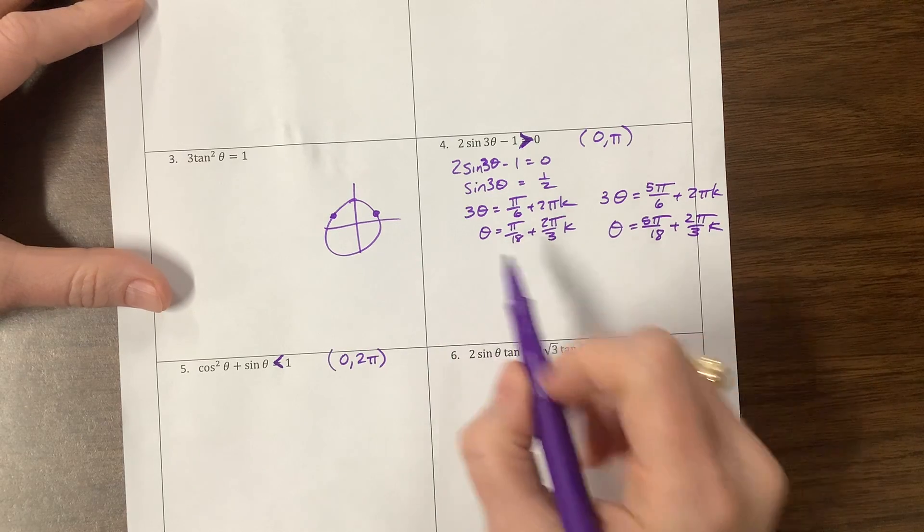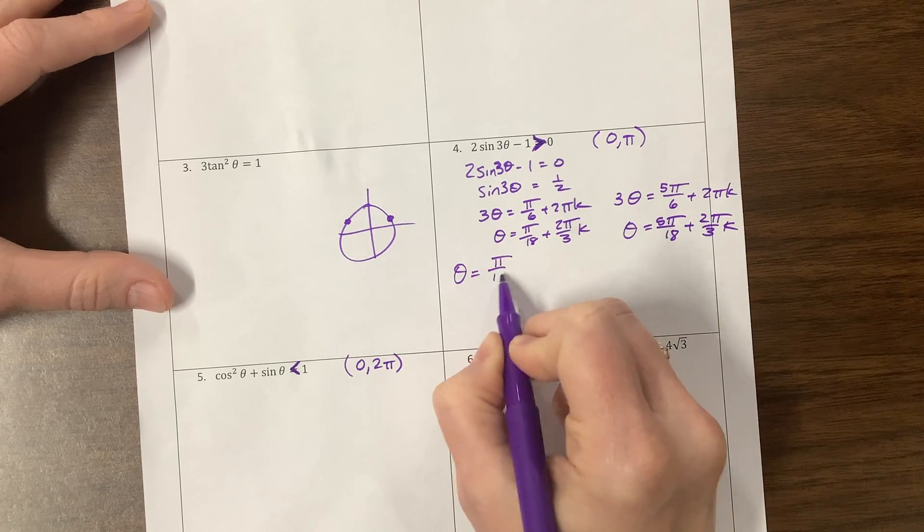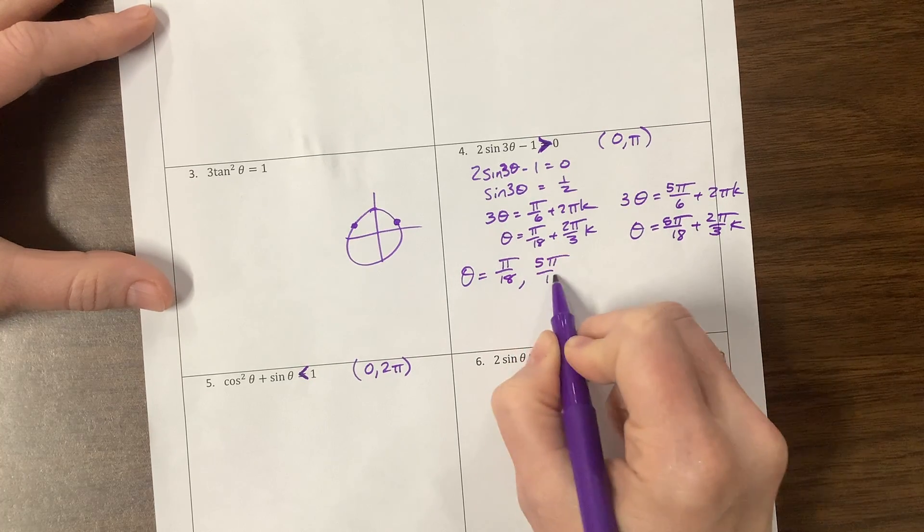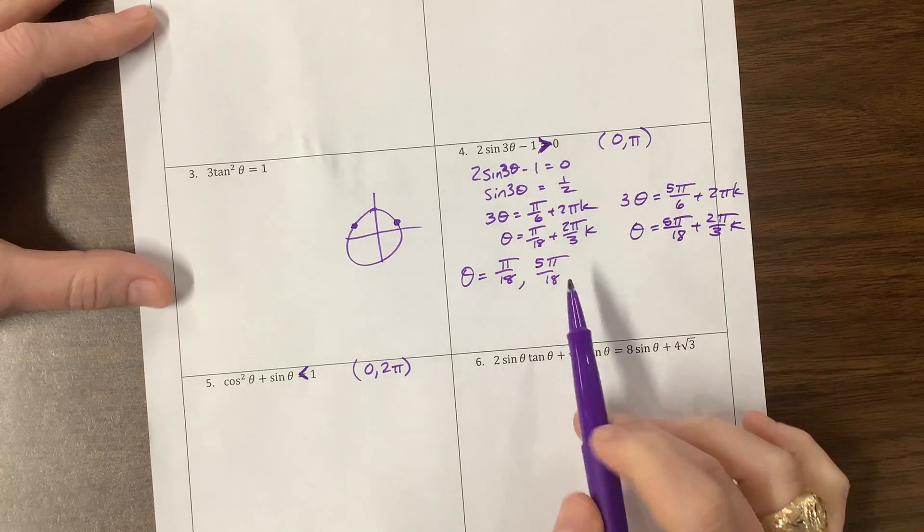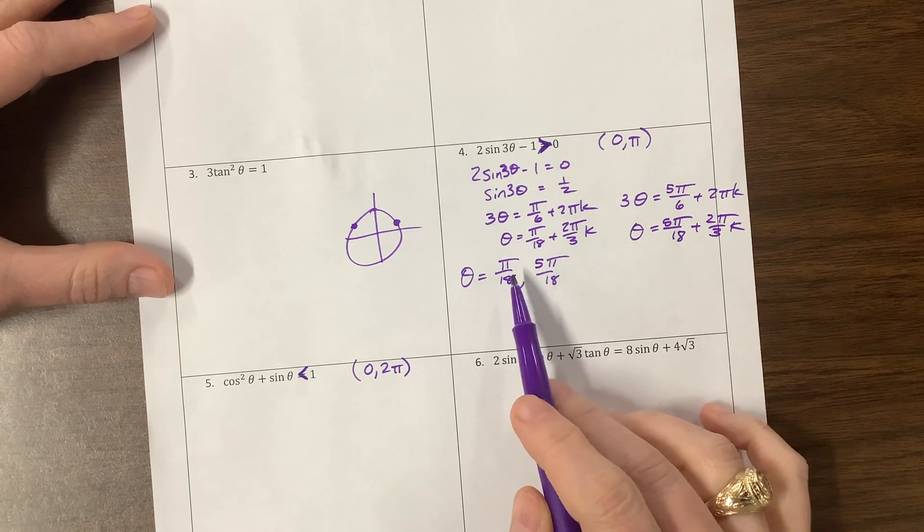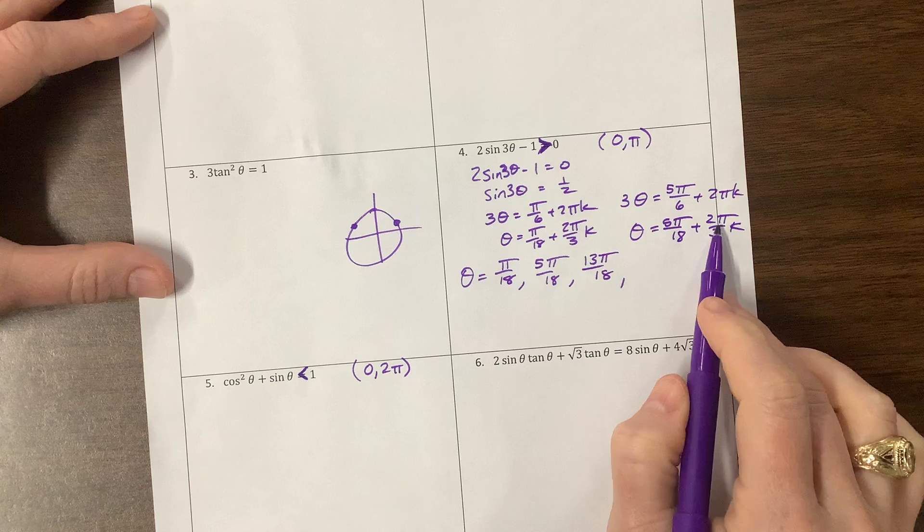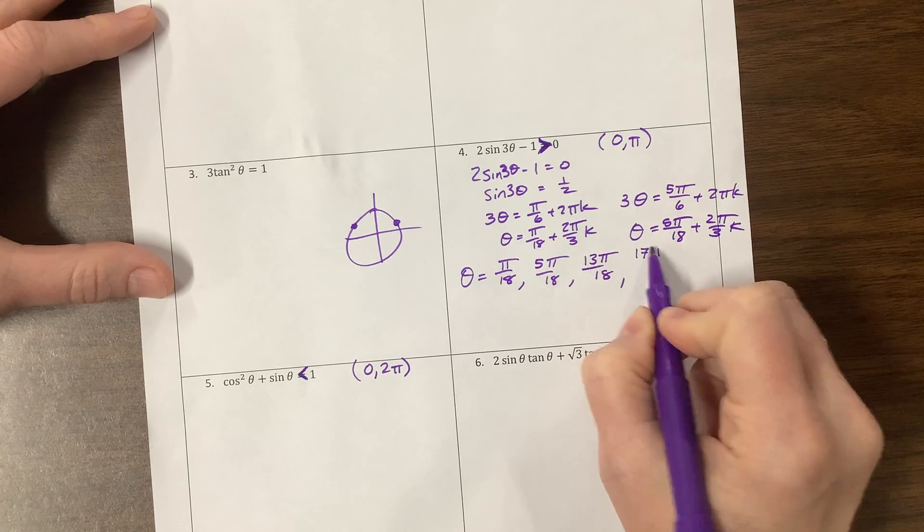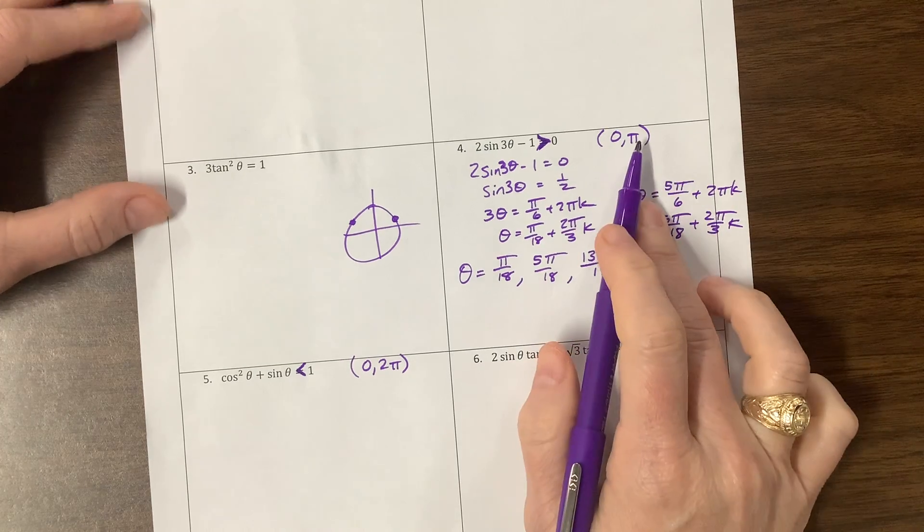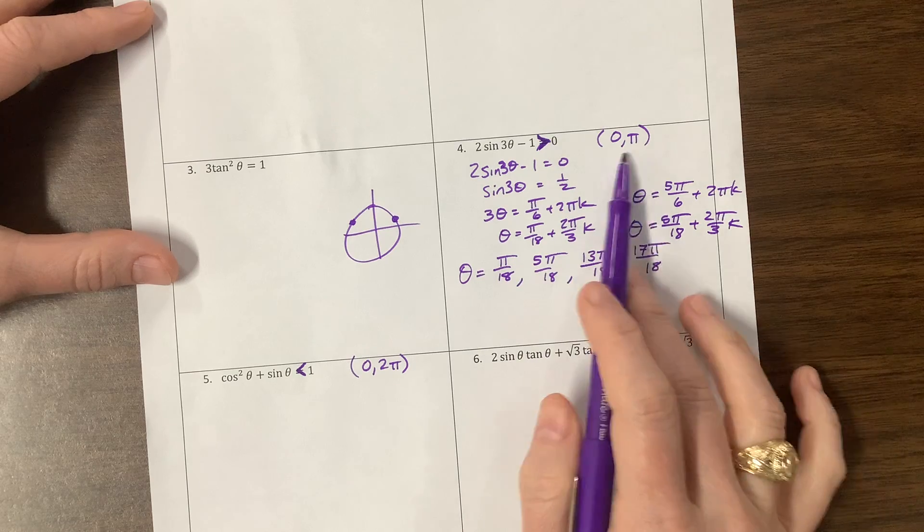So where was I? If we're at pi over 18 and then, so we're living inside this world of 0 to pi, I have pi over 18 and then I can add, and then I have 5 pi over 18 and those are definitely both less than pi. Then if I add 2 pi over 3 which would be 12 pi over 18, this gives me 13 pi over 18 and this would give me this one plus 12, it would be 17 pi over 18. Now if I try to add 12 to this, I'm 25 pi over 18 which is bigger than pi. So basically I have these four values that live inside this world.